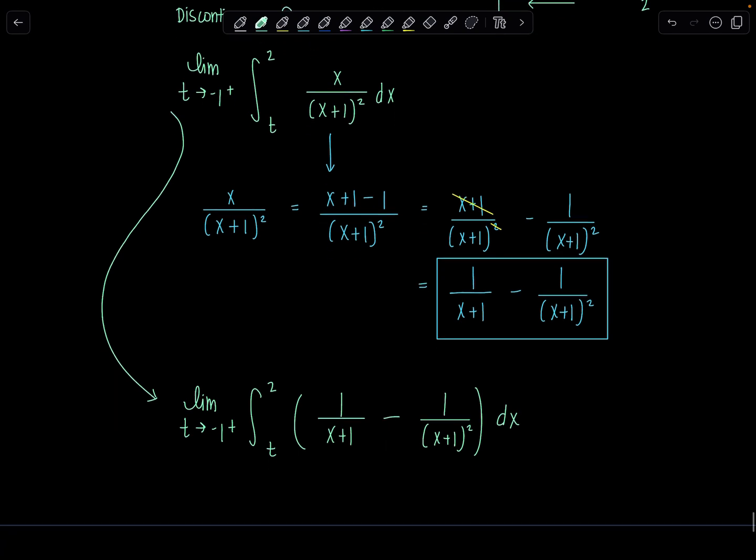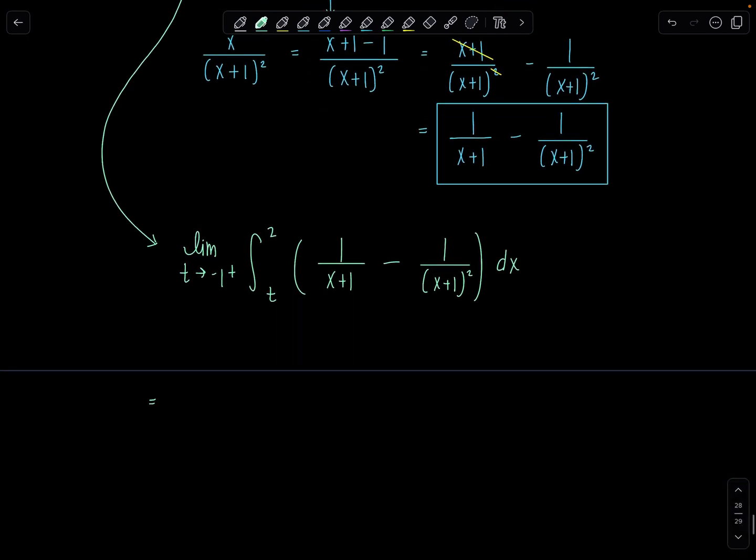All right. Now we can just integrate term by term. So we've got the limit t approaches negative 1 from the right. No more integral sign. Antiderivative of 1 over x plus 1 is going to be ln absolute value x plus 1 minus, and then keep in mind, this right here is x plus 1 to the negative second power. So when we take an antiderivative, we add 1 to the exponent and then divide by it. So that's going to make this a positive now, 1 over x plus 1. And this is all going to get evaluated from t to 2.